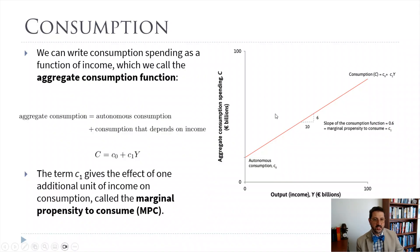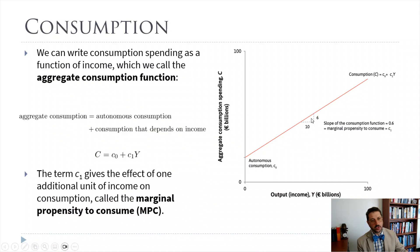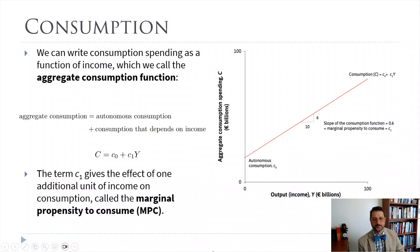In this example, the MPC is equal to 0.6. So when income increases by $10 billion, consumer spending increases by $6 billion. Our slope for the consumption function is less than one — we have some positive vertical intercept and a slope that's less than one. That's going to be important for our multiplier model.